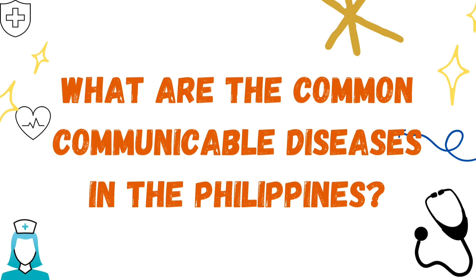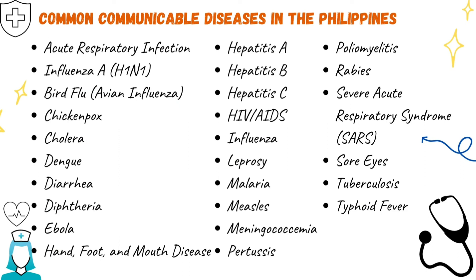What are the common communicable diseases in the Philippines? We have many, but the most common are dengue, sore eyes, HIV or AIDS, diarrhea, cholera, and influenza. We are going to talk about those in more detail in our next video.